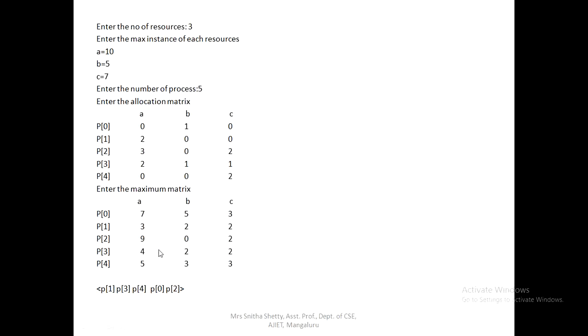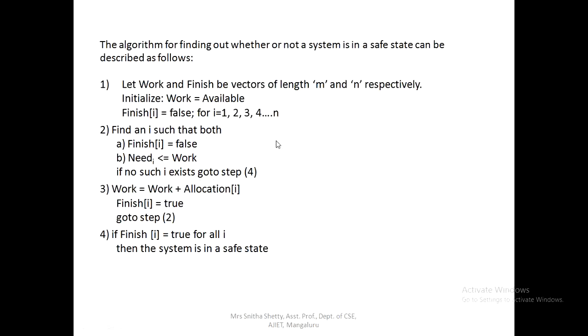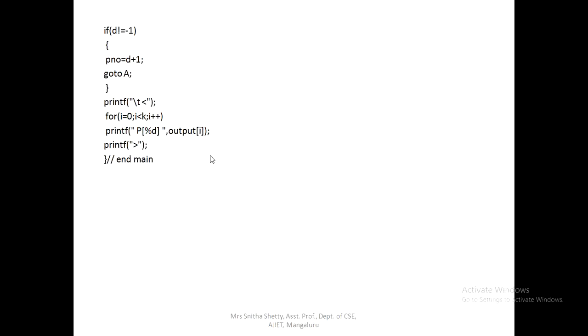So this is the complete program. Up to the input-reading section, we take all the required data. The main logic is just the condition check: if need ≤ work, update the work matrix and print into the output array. Thank you.